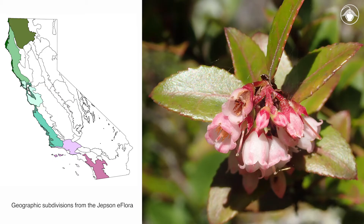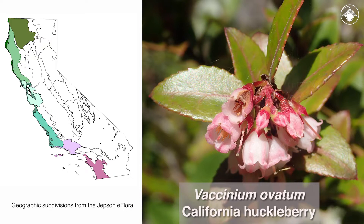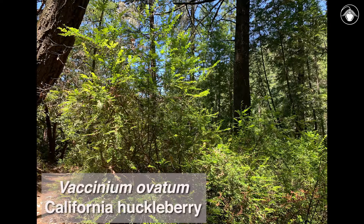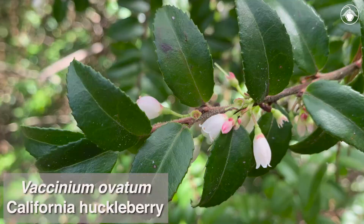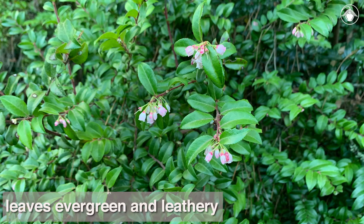A commonly found species in coastal California is Vaccinium ovatum, the California huckleberry. It tends to prefer sunlit edges and clearings in mixed evergreen and conifer forests. The leaves of the California huckleberry have serrate margins.